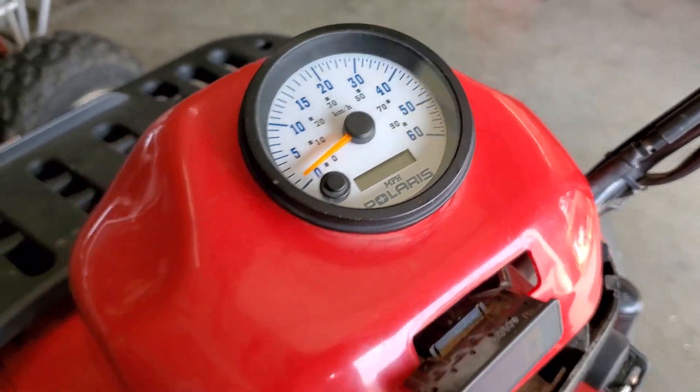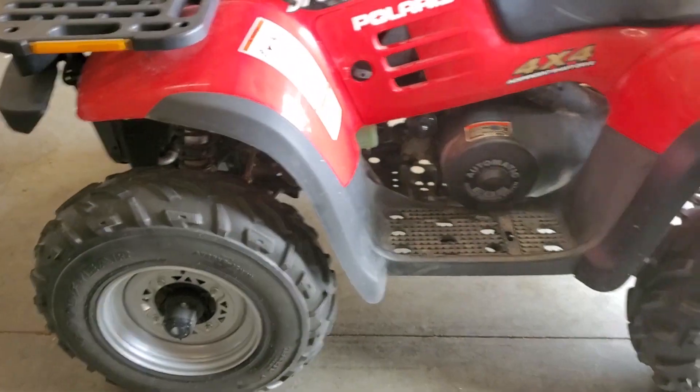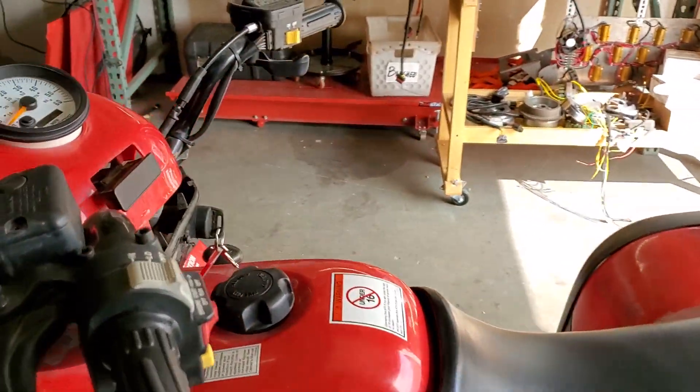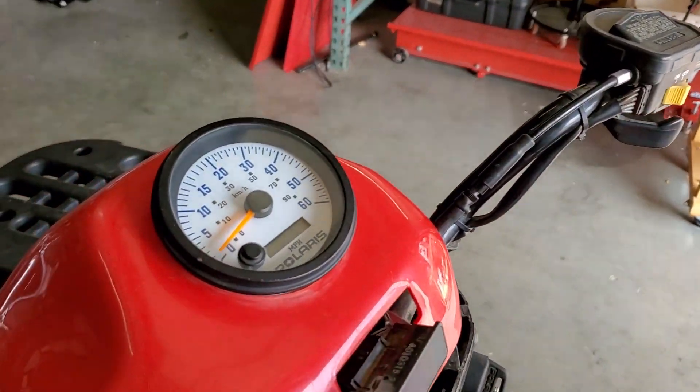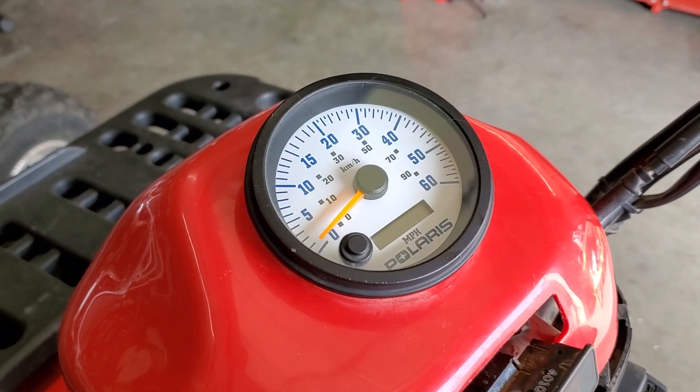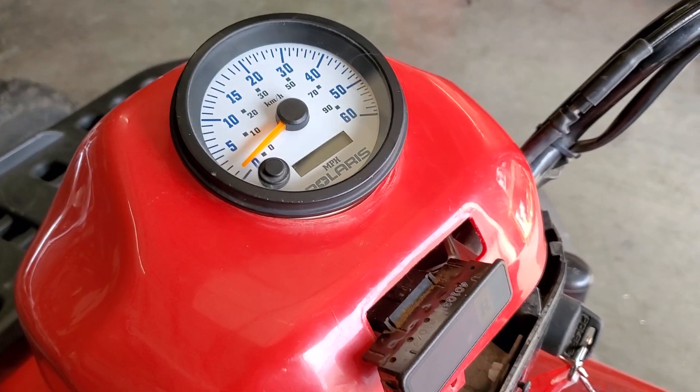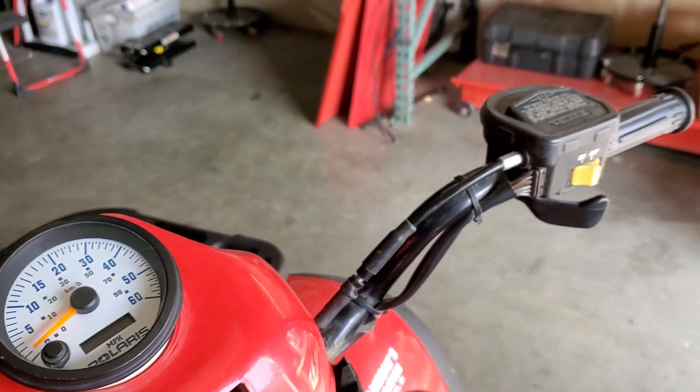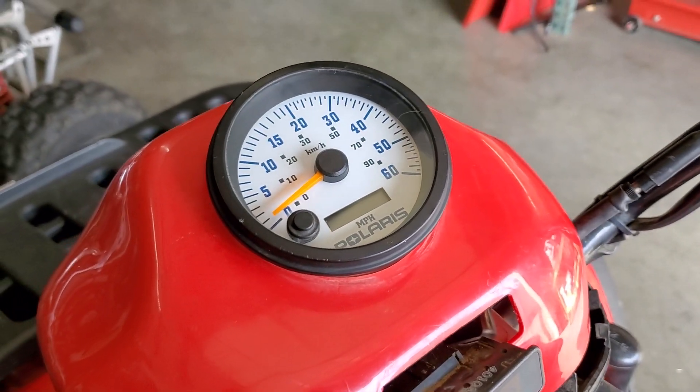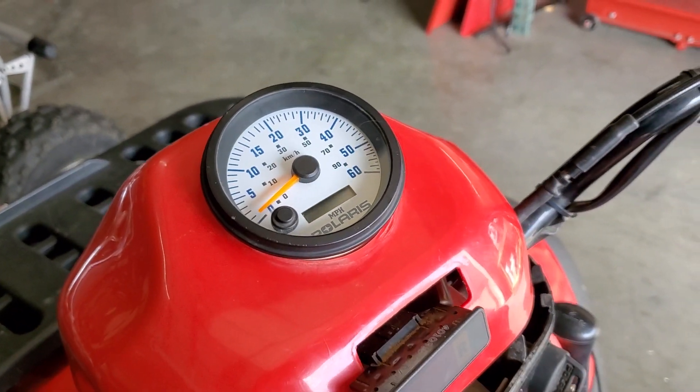So this is my quad. It's in real nice shape but the speedo is totally dead. Usually what happens on these things is the voltage regulator fails or the battery fails and the charging system pushes the voltage up too high, takes out a bunch of lights, light bulbs.